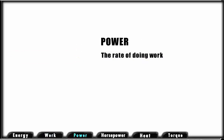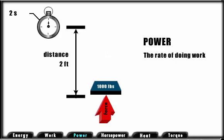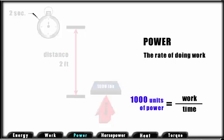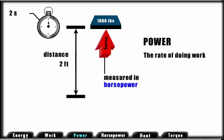Power may be defined as the rate of doing work or work over time in seconds. If we lift 1,000 pounds 2 feet in 2 seconds, we have accomplished 1,000 units of power or 1,000 times 2 divided by 2 seconds. To give us relative meaning for measuring power, we must convert this to horsepower, which is a unit of measuring energy.